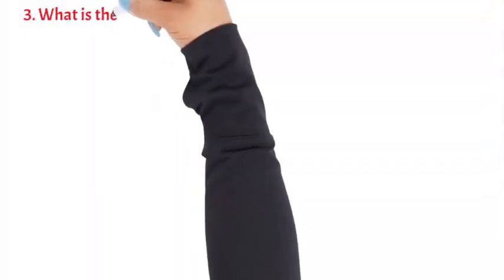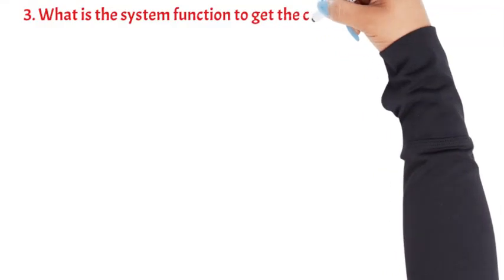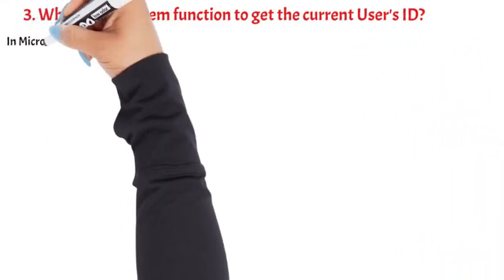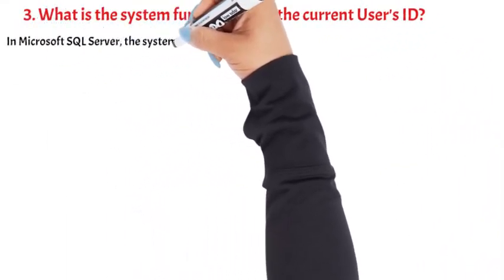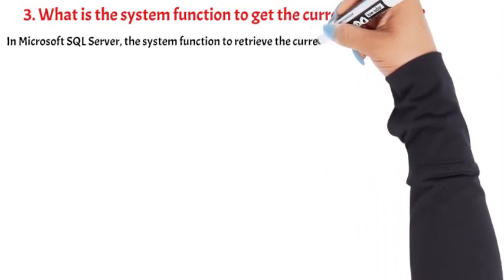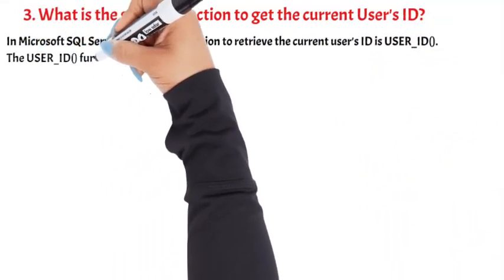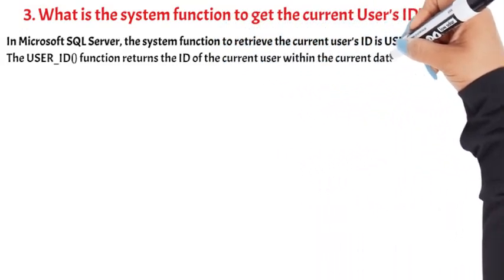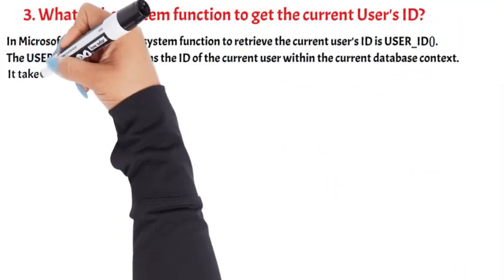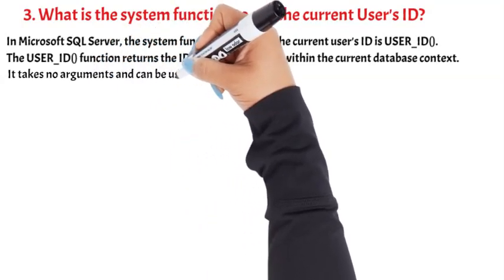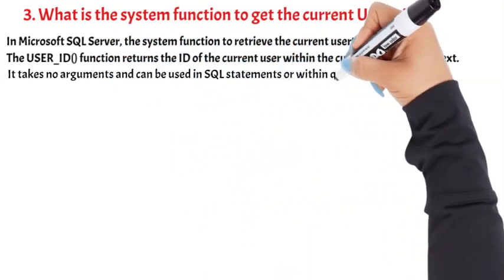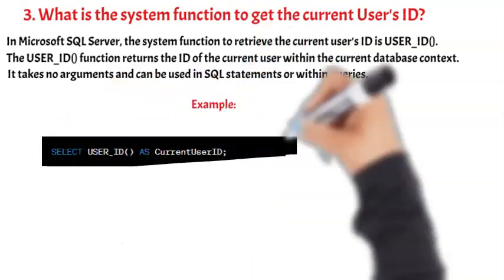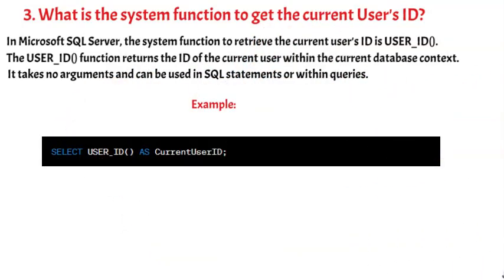Question 3: What is the system function to get the current user's ID? In Microsoft SQL Server, the system function to retrieve the current user's ID is USER_ID(). The USER_ID function returns the ID of the current user within the current database context. It takes no arguments and can be used in SQL statements or within queries. This query will return the ID of the current user in the result set.